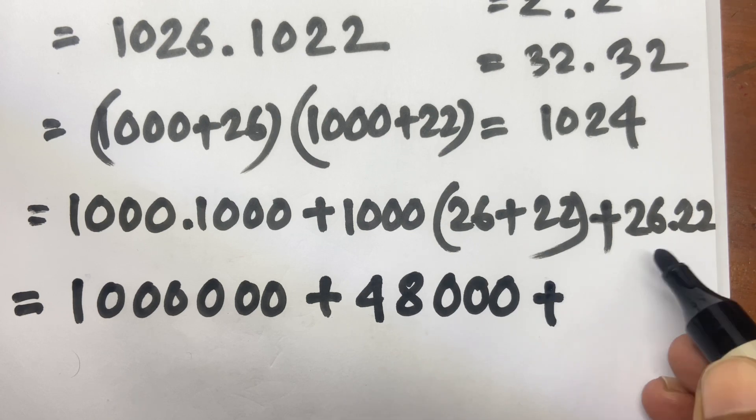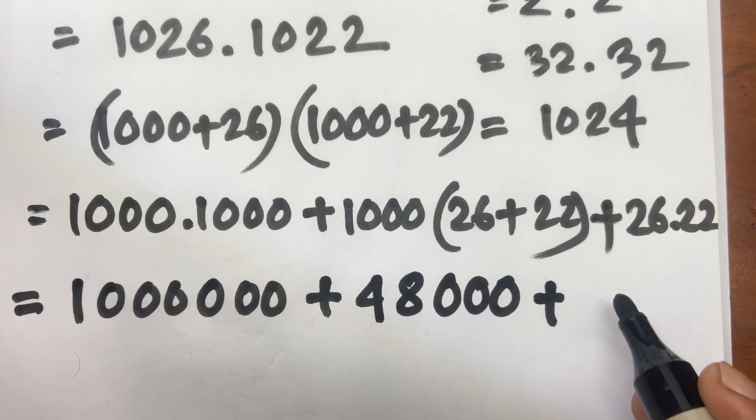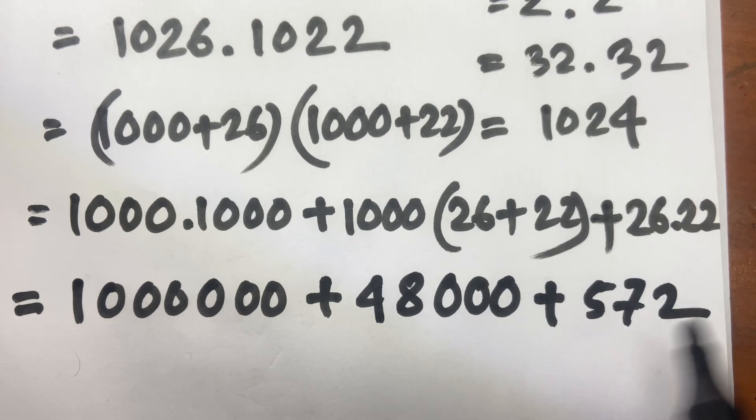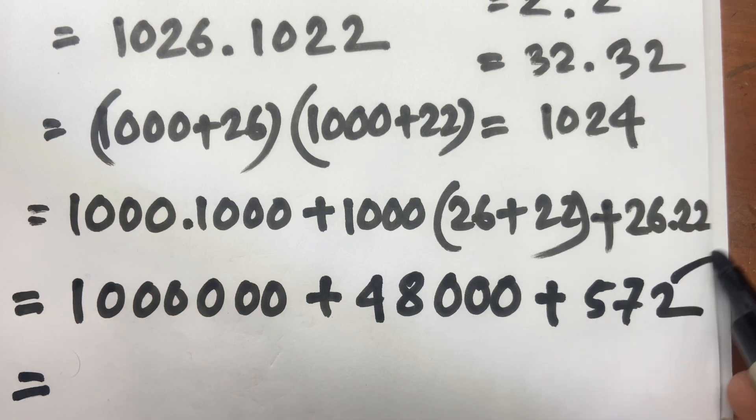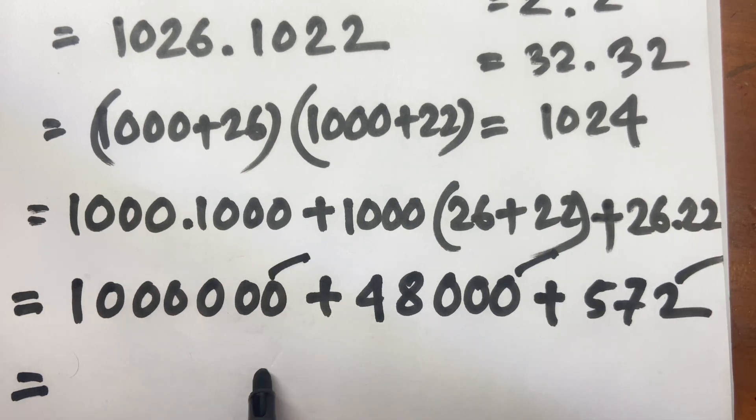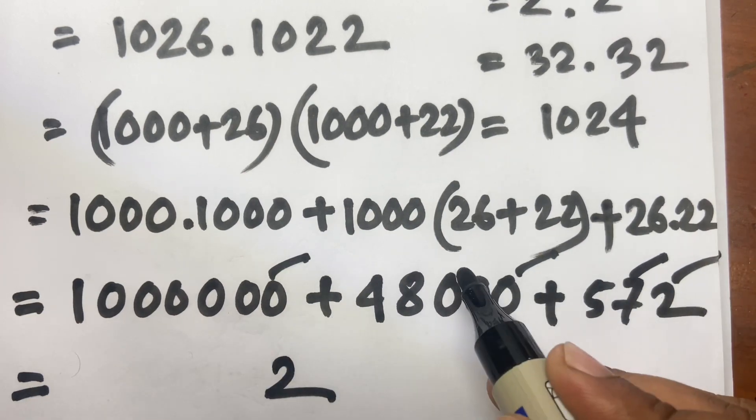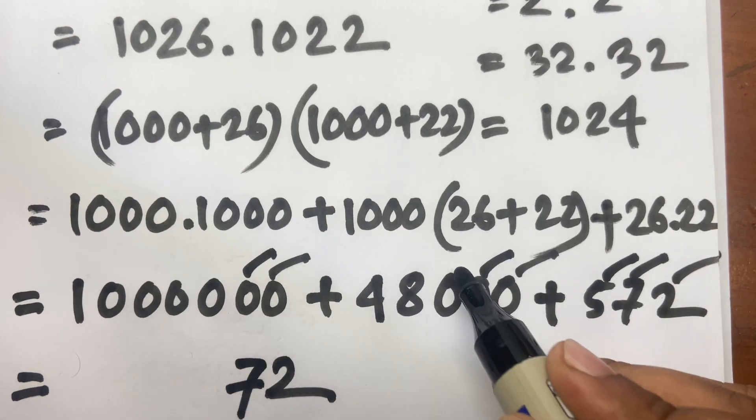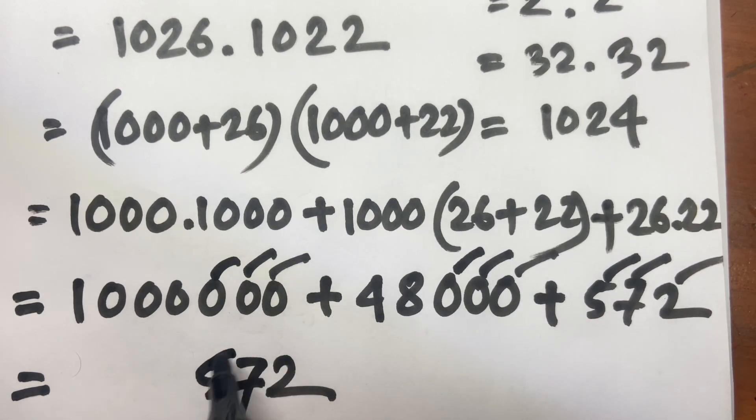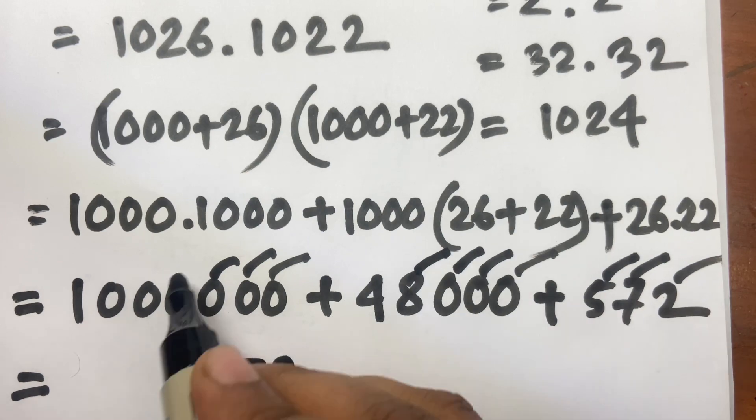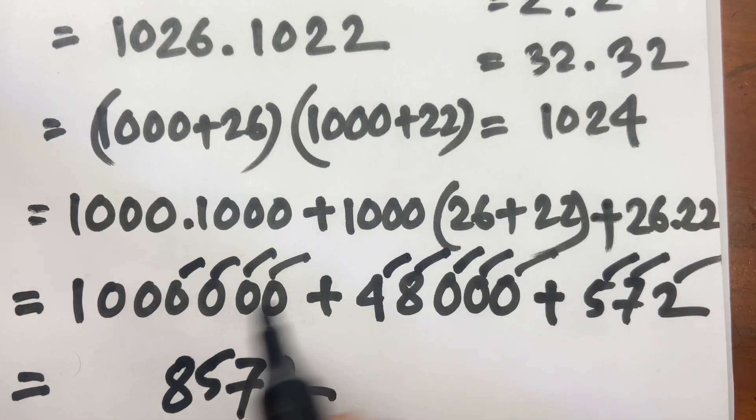And we know that 26 times 22 equal to 572. Now I add: here is 2, so this is 2700, this is 7500, this is 5, and here is 80, this is 8, here is 40, this is 4, and here is 1, this is the answer.